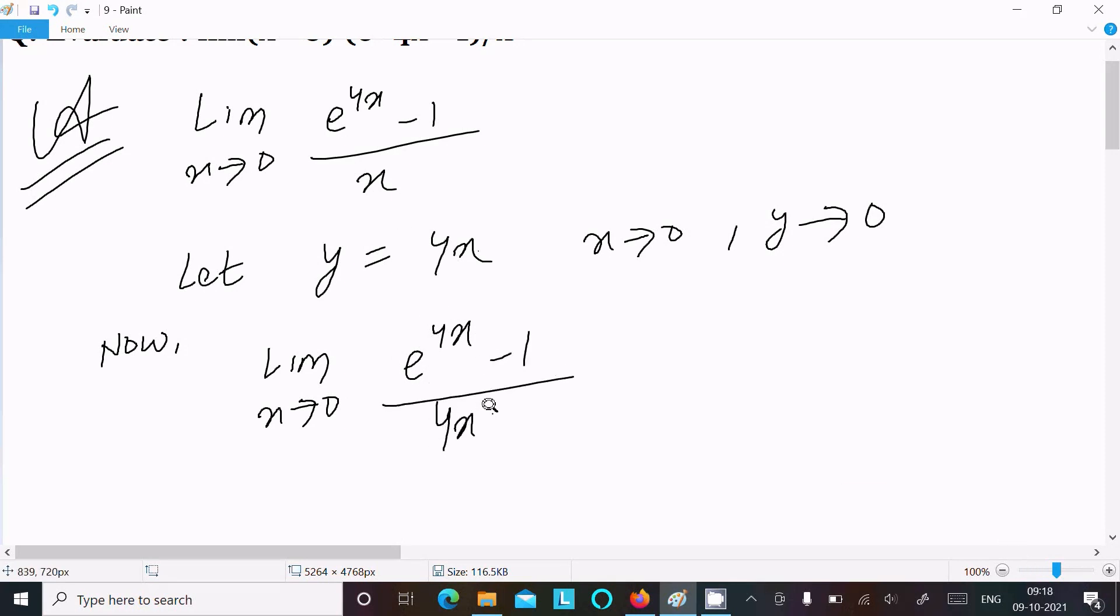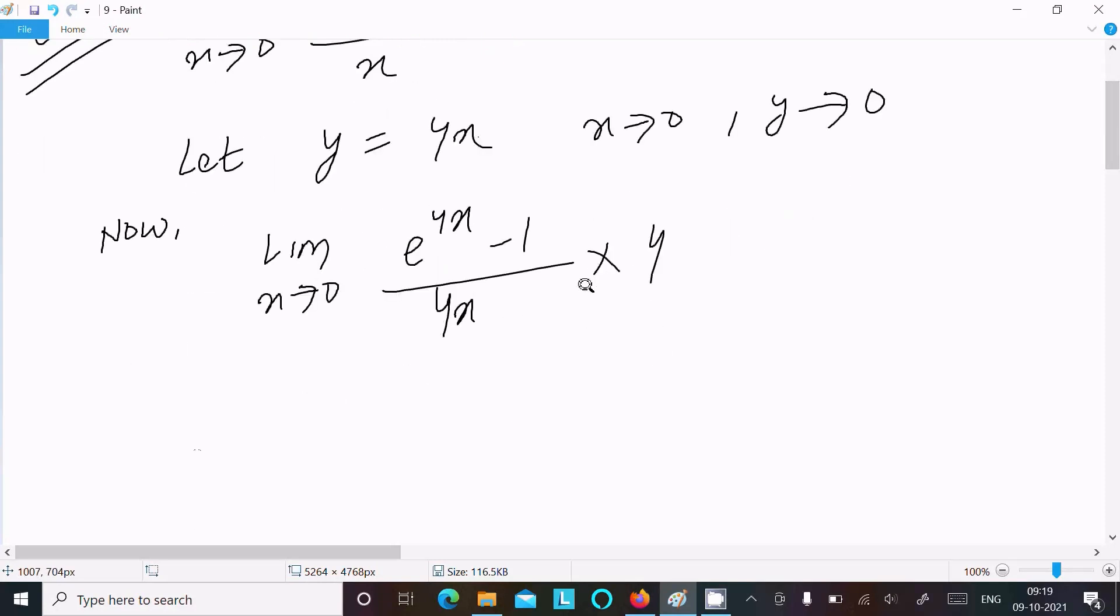We can write 4x, that is equal to y. So 4 multiply here, then divide here, then multiplying there also. So 4 cancels, there comes x only. So after that, now limit x tends to 0.